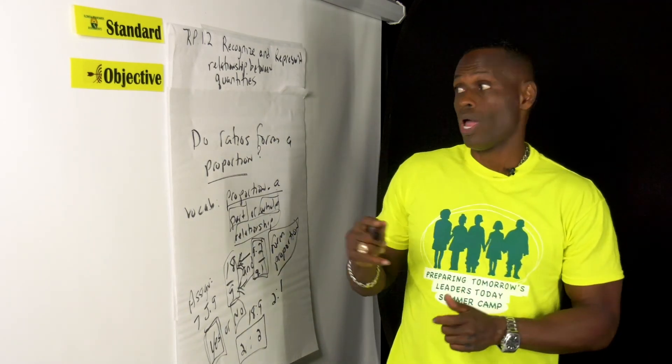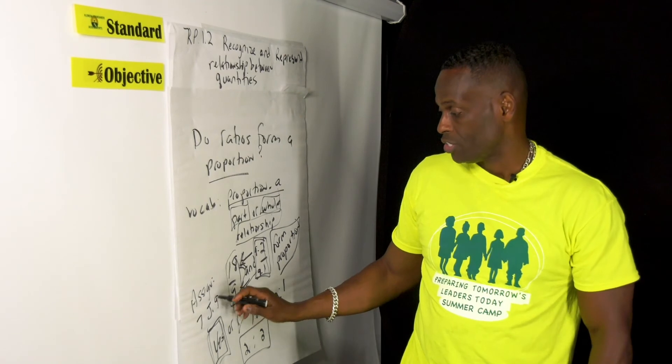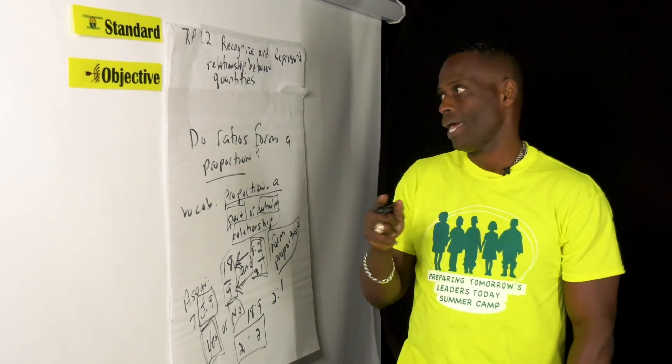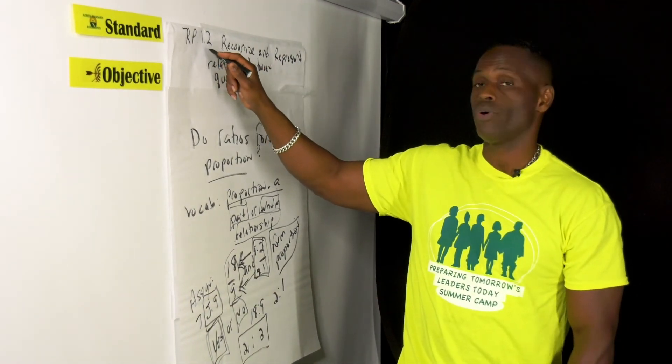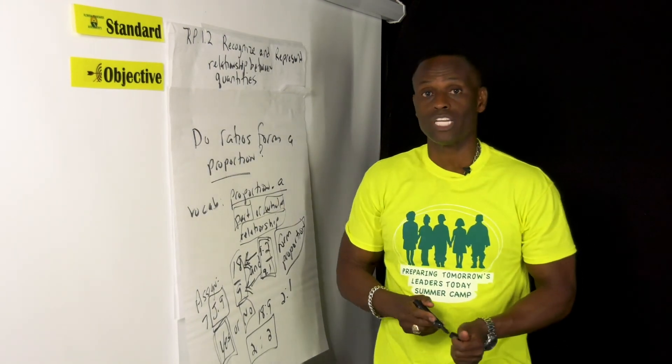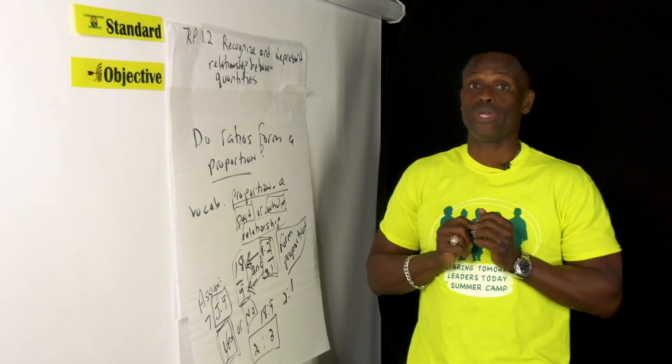So as we wrap this up, you're going to go practice this standard under J9, under math, under ratio and proportion, under 1.2. So we look forward to seeing you in the next classroom. Believe in yourself and have a great day.